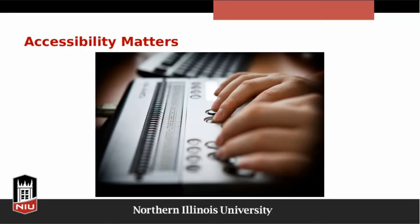An additional way to tweak our courses is to ensure accessibility in course materials. I recommend exploring the Blackboard Ally resources on the CIDAL website. That tool helps you identify documents that might have accessibility issues and assists you in fixing those issues so all students can benefit from your online course materials.